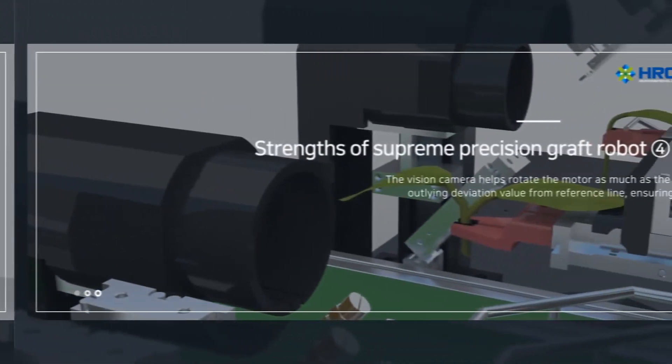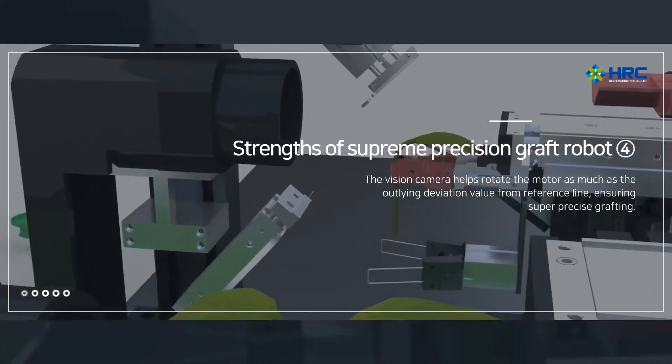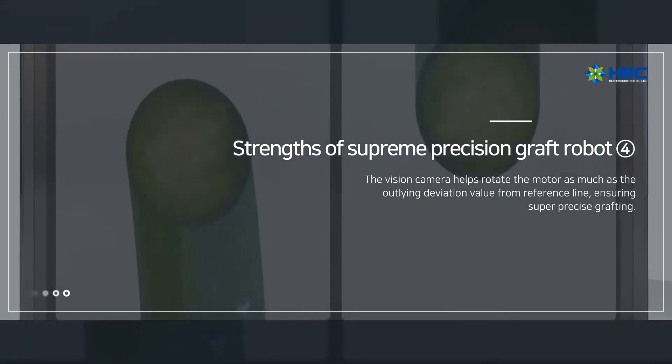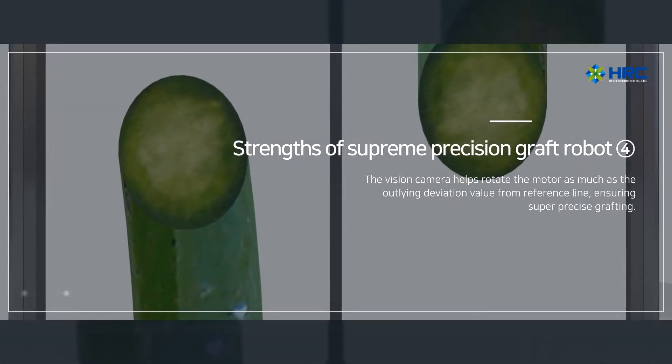Moreover, the vision camera helps rotate the motor as much as the outlying deviation value from reference line, ensuring supremely precise grafting.